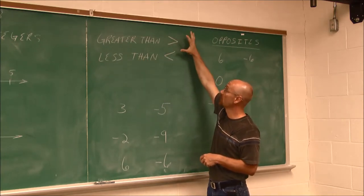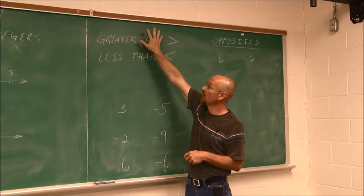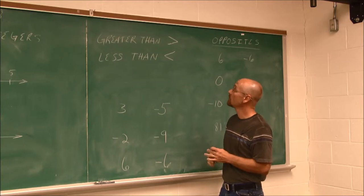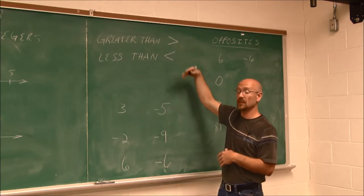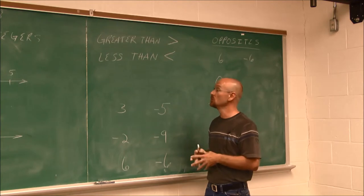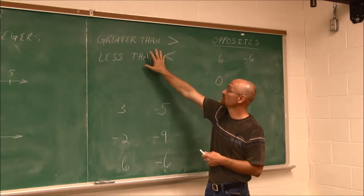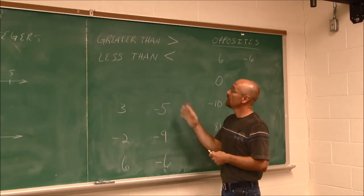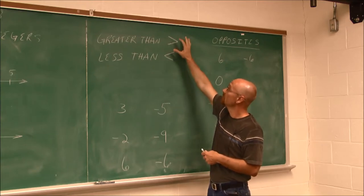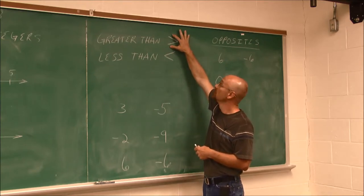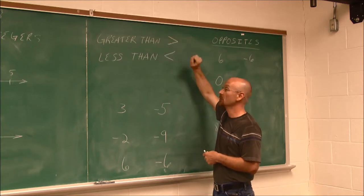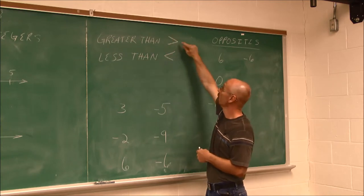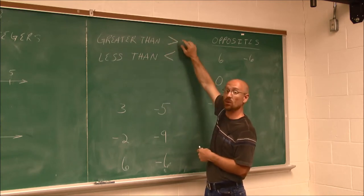We're looking at greater than and less than. This is the symbol that says greater than. A value on the left side would be greater than a value on the right side. From time to time, we might see a line underneath one of these. That just means it could also be equal to. Less than means the value to the left is less than the value to the right.